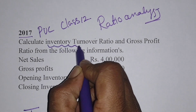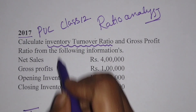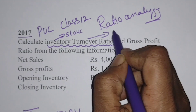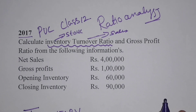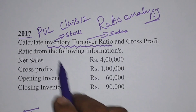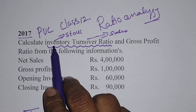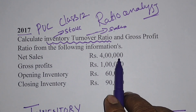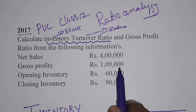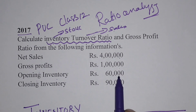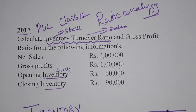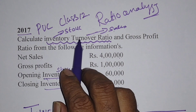Now calculate inventory turnover ratio. Inventory means stock, and turnover means sales, so we are comparing inventory (stock) with sales. The given data: net sales 4 lakhs, gross profit 1 lakh, opening inventory 60,000 rupees, closing inventory 90,000 rupees. The formula for inventory turnover ratio is cost of revenue from operations divided by average inventory.